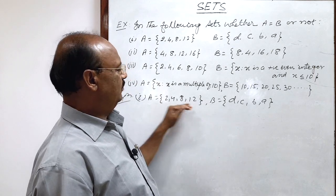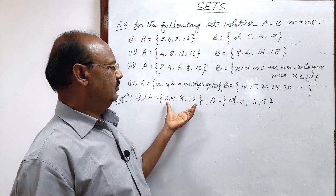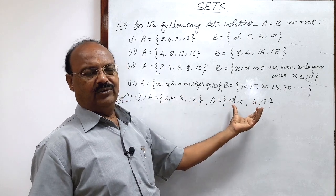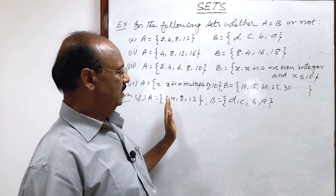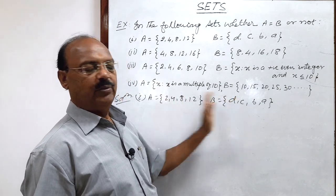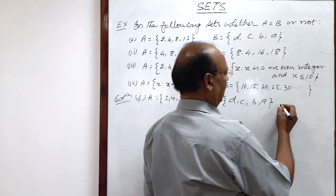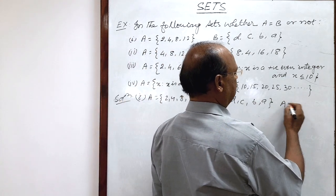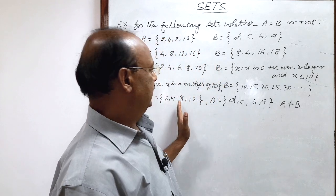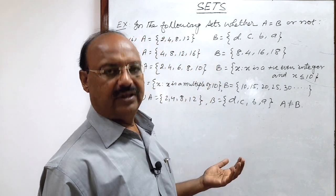Of course, the number of elements are equal — set A has 4 elements and set B also has 4 elements — but the elements are different, members are different. So these two sets are not equal. Here A is not equal to B. The reason is that in these two sets, the elements differ; they are not the same.